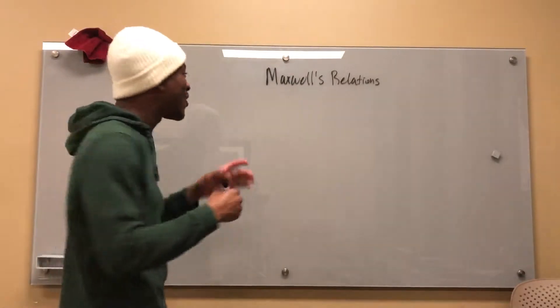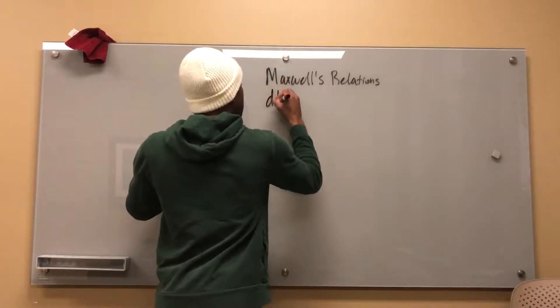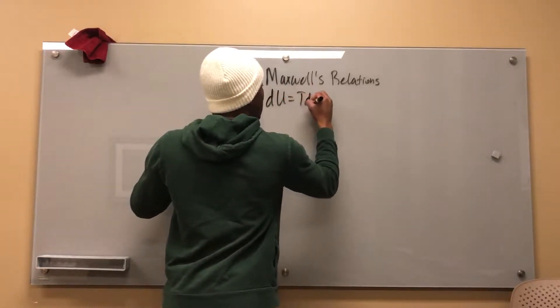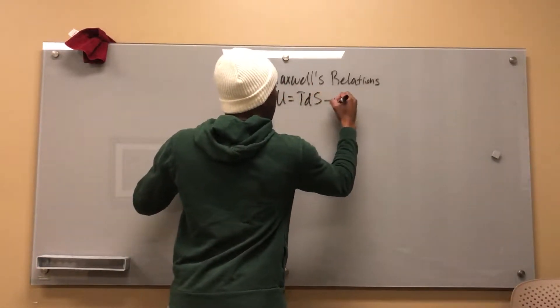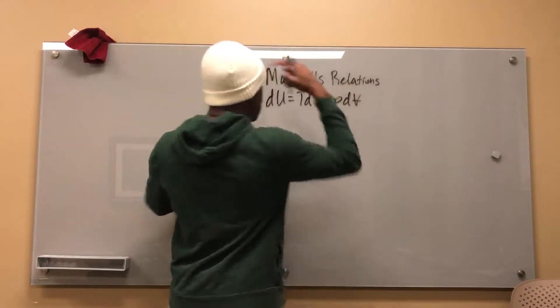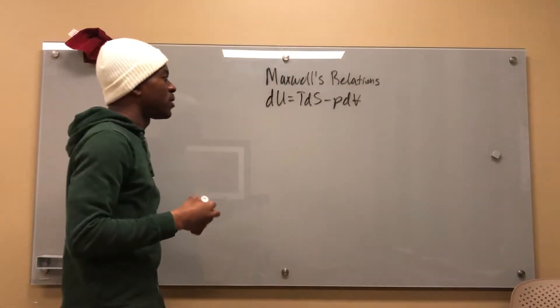We're going to start off with the fundamental equation — the first law and second law combined equation: dU is equal to TdS minus PdV.